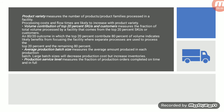A facility which produces more product variety is responsive because it provides that variety to customers. But a facility which produces only one variety is efficient because it continues production without stopping. When you have variety you have to stop production — like when colors change — and that increases setup time and time waste. So there is a trade-off between variety and efficiency.